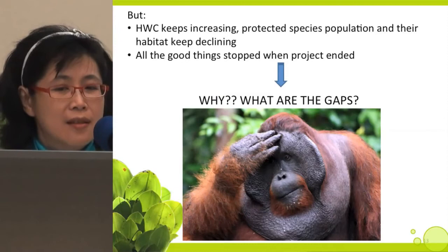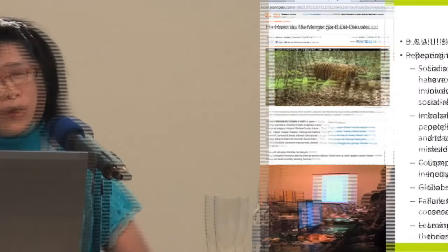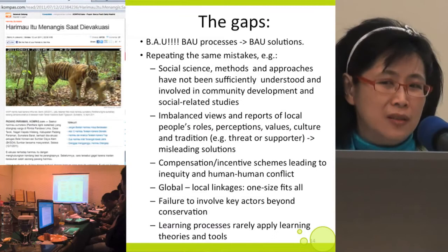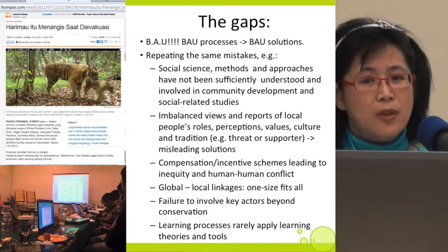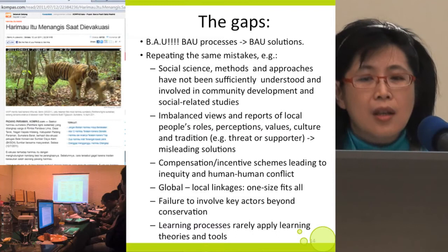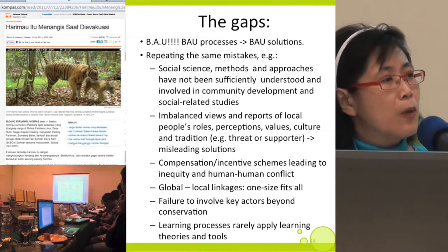So the question is: why? What are the gaps? First, business as usual processes — business as usual research assuming that doing research and producing recommendations will lead to a better world — it's business as usual solutions. It's not working. It's also related to repeating the same mistakes. Social science methods and approaches have not been sufficiently understood and involved in community development and social-related studies. This is one reason why all the good things stop when the project ends — high dependency on the project.